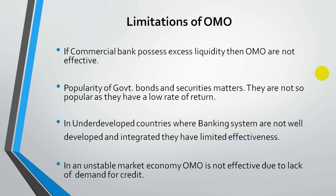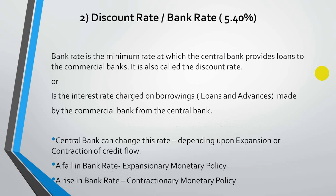Another limitation is that in economies with unstable markets — with sudden booms and sudden depression — the concept of open market operations fits less effectively. The second quantitative tool is the bank rate, also referred to as the discount rate. The current rate is 5.30%, which was reduced from 5.40% considering the impact of coronavirus on the Indian economy.